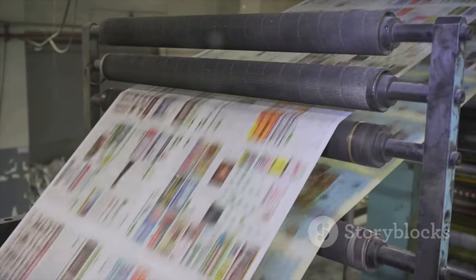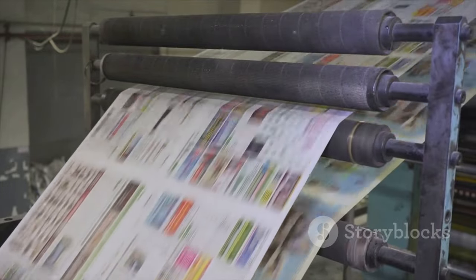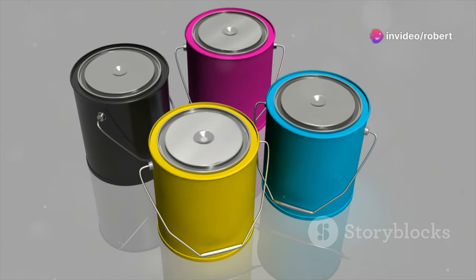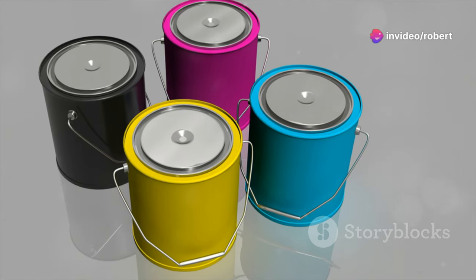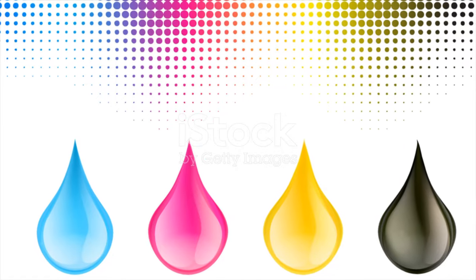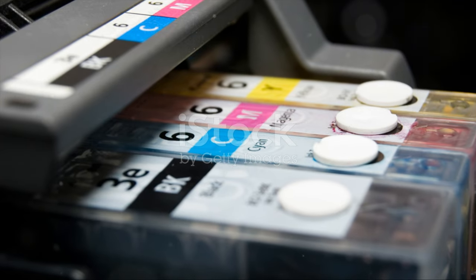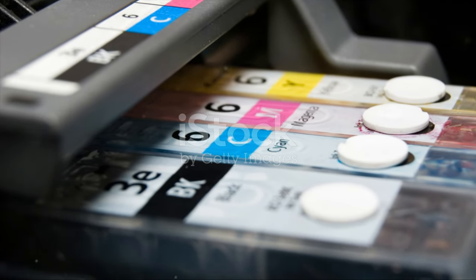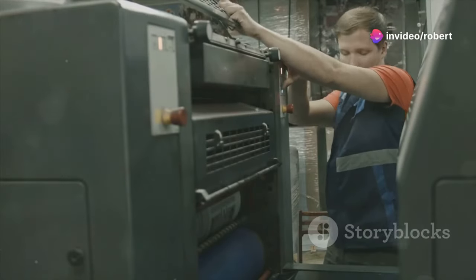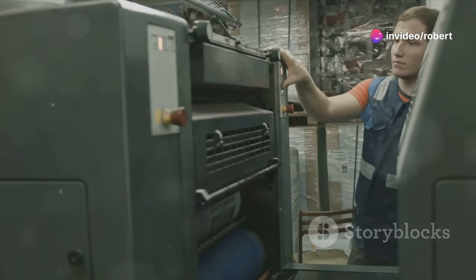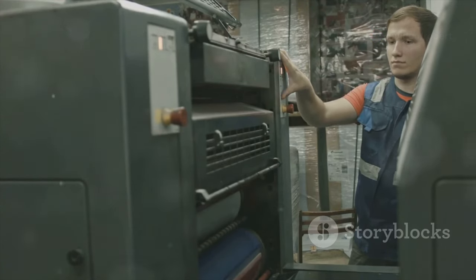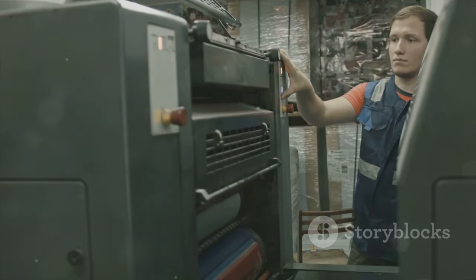Each colour in your design is then created by layering these four inks onto the printing surface. The process involves precise control to achieve the desired hues and shades. The amount of each ink used determines the final colour. By adjusting the levels of cyan, magenta, yellow and black, printers can produce a wide spectrum of colours, ensuring that the final print is vibrant and true to the original design. This meticulous process is what allows printed materials to captivate us with their rich, detailed imagery, making the language of print a fascinating and essential part of our visual world.